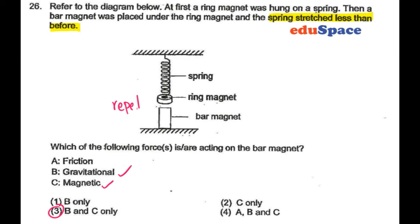Think of it this way: if without the bar magnet, the ring magnet is actually, the spring stretches more, so the ring magnet is closer to the ground. With the bar magnet, the spring stretches less. That means the ring magnet is further away from the ground. It gets pushed up, so that's a repulsion force.